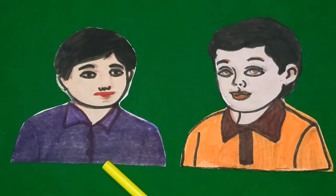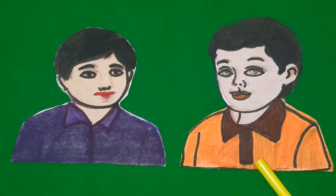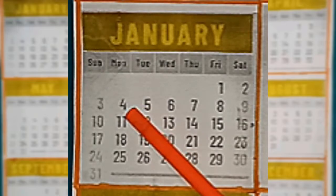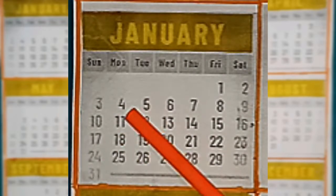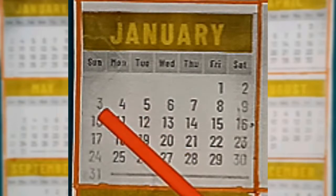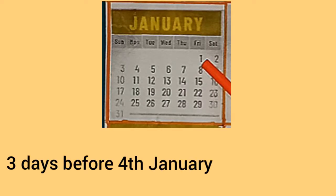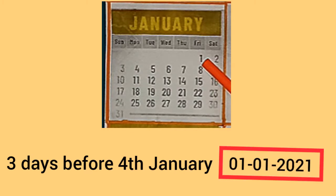Aman says my birthday was 3 days before 4th January. So Harman says, let's now look at your date of birth on the calendar. Now we count 3 days before 4th January. Let's count: 1, 2, 3. It means the date 3 days before 4th January 2021 is 1st January 2021.